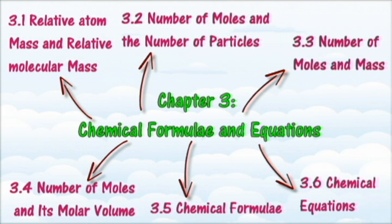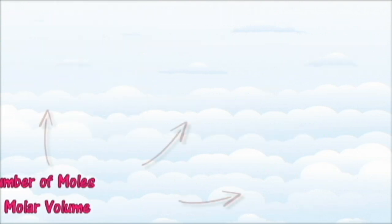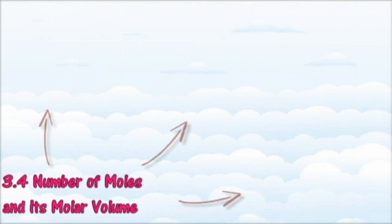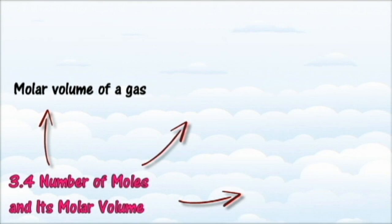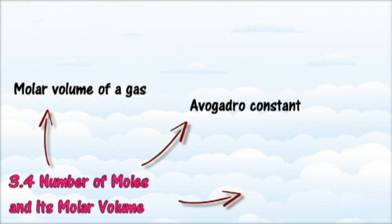In Section 3.4, we will learn about the relationship between the number of moles with its volume. At the end of this section, you should be able to state the meaning of molar volume of a gas, relate the molar volume of a gas to the Avogadro Constant, make generalization on the molar volume of a gas at a given temperature and pressure, and calculate the volume of gases at STP or room conditions from the number of moles, and vice versa.